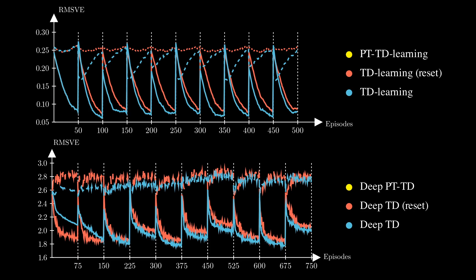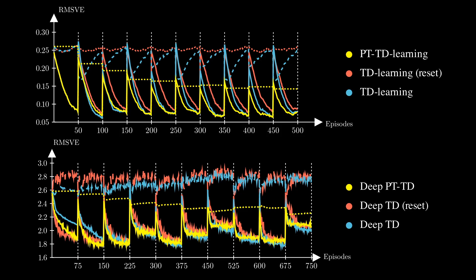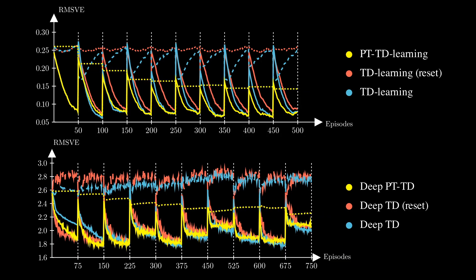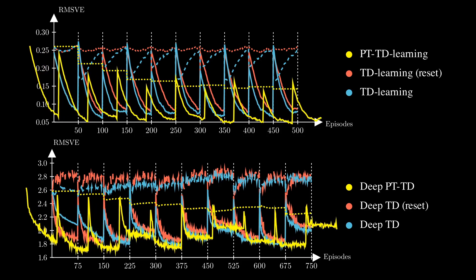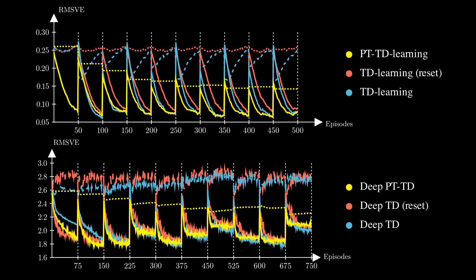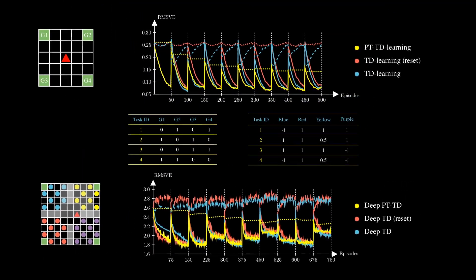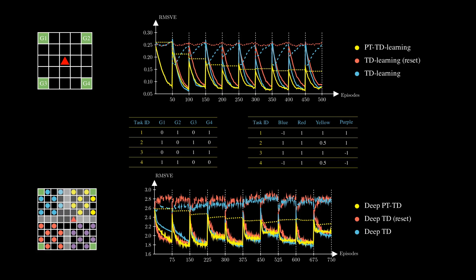Our algorithm works well on both performance measures. The permanent value function learns common information across all tasks, resulting in lower errors on the second performance measure throughout the experiment. Also, due to the good starting point provided by the permanent value function, the transient component requires little data to make adjustments, resulting in fast adaptation on the new task. In our method, the permanent component provides stability and the transient component provides plasticity, resulting in a good balance between the two.